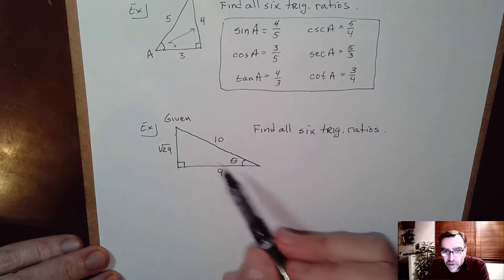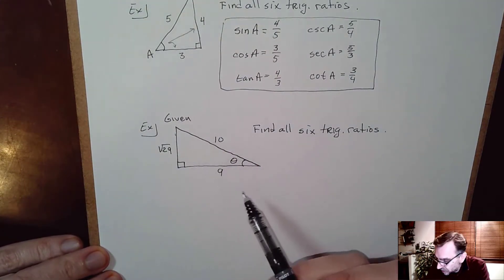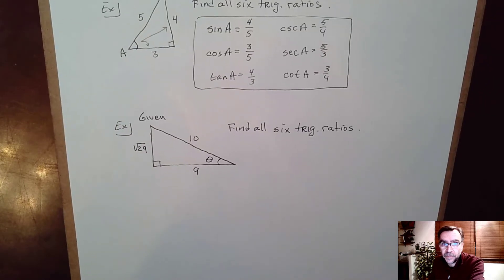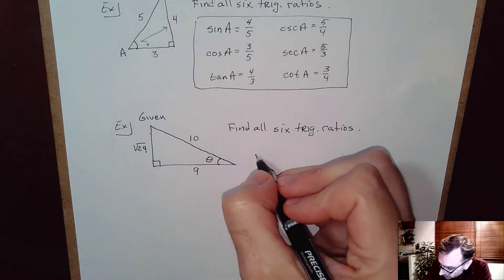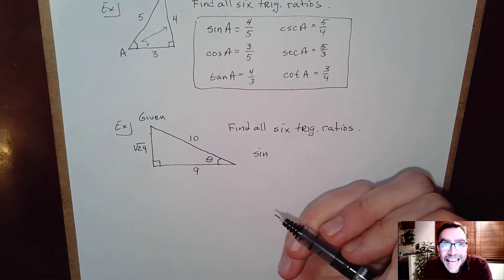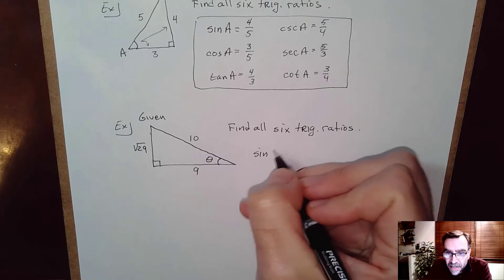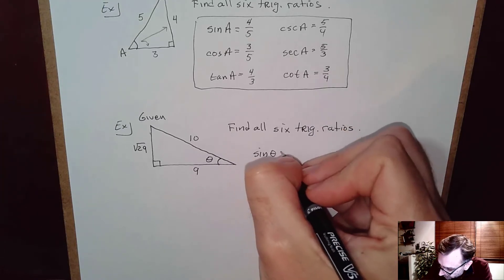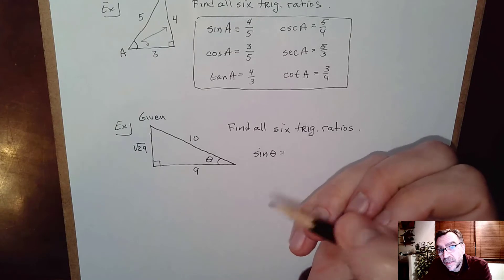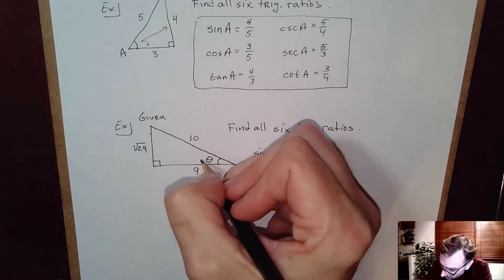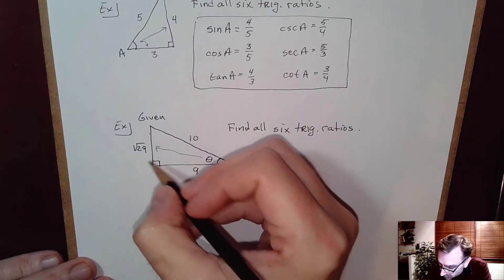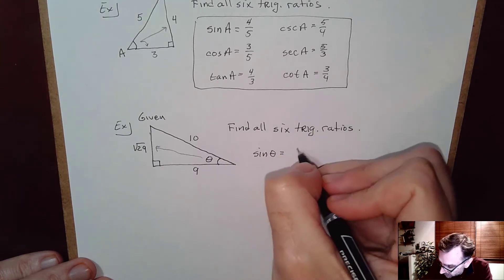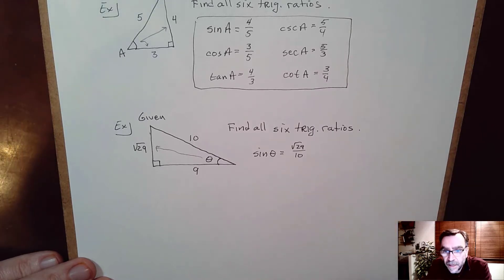Here we're given a triangle with all sides known, and they ask us to find all six trig ratios. The trig ratios operate on an angle — you can't just put sin, you have to specify an angle. The angle is theta. Sine is defined as opposite over hypotenuse. Looking at theta, the opposite side is √29, and the hypotenuse is 10, so sine of theta equals √29 over 10.